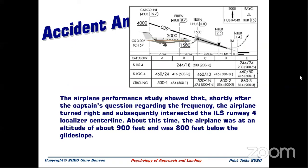An FAA Advisory Circular for transport category airplane electronic display systems, dated 1987, provides guidance on the location of essential flight instrument displays including the glide slope indicator. It recommends standardizing the glide slope indicator to the right side of the main display. However, the accident airplane was manufactured before the guidance was issued. Five other company airplanes flown by the accident pilots had the glide slope indicator on the left side; of those, four had fast/slow indicators on the right side. Three of the company's airplanes had the glide slope on the right side. So the pilots flew aircraft with mixed configurations — the glide slope and fast/slow indicator were in different positions depending on the airplane.